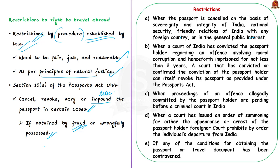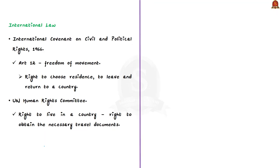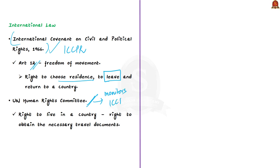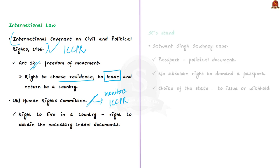Pending criminal cases before a court are also grounds for restricting overseas travel. Under international law, the 1966 ICCPR — International Covenant on Civil and Political Rights — is the key treaty. Article 12 of ICCPR guarantees freedom of movement, including the right to leave and return to a country. The UN Human Rights Committee, which monitors ICCPR implementation, holds that the right to live in a country includes the right to obtain necessary travel documents.